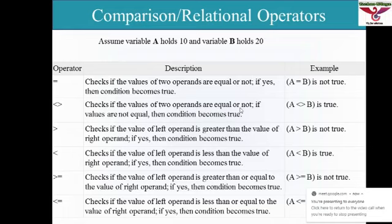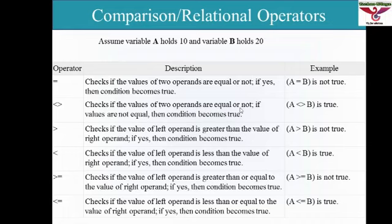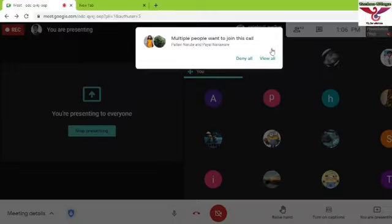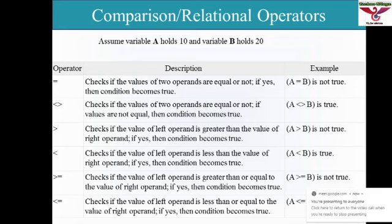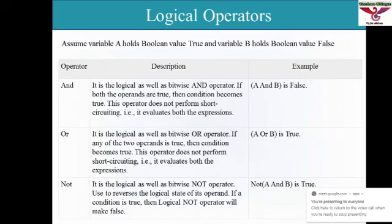If the variable values are equal it will be true; if not equal you have a false value. If you are using greater than, the condition is true if satisfied, otherwise false. These are the relational operators which we use in conditional statements or looping statements.